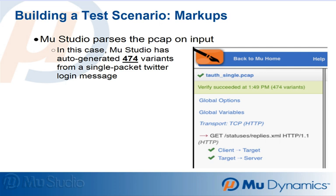In this case, even without markups, Mu Studio has auto-generated 474 variants on the single packet that was in the PCAP we imported. So we got 10,899 test cases from a single packet.